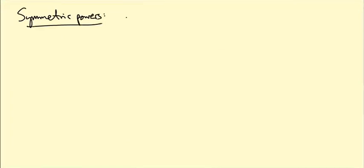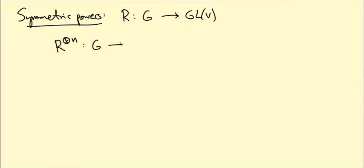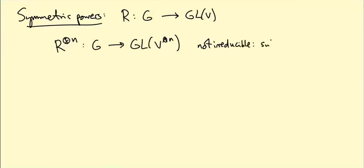Here is the third construction, called the symmetric power. Starting with one representation on GL(V), we take its nth tensor power — a representation on V ⊗ V ⊗ … ⊗ V (n times). We observe this is not irreducible, because we can produce a sub-representation consisting of symmetric tensors, and this will be an irreducible representation, at least for SU(2).